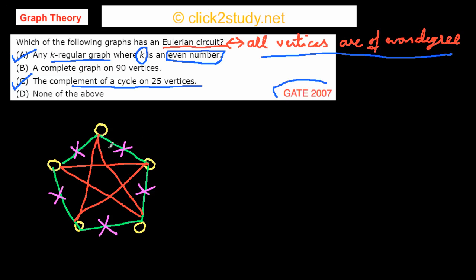Now let's check whether this complement has an Eulerian circuit. In K5, every vertex has degree 4 since every vertex connects to every other. In the cycle, all vertices have degree 2. When you remove the cycle to get the complement, you subtract 2 from each degree, leaving all vertices with degree 2, which is even — so there is an Eulerian circuit.